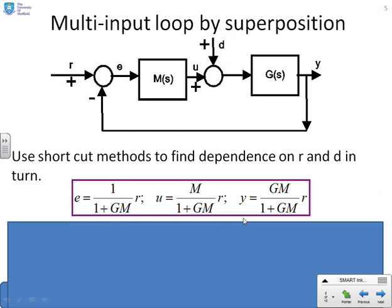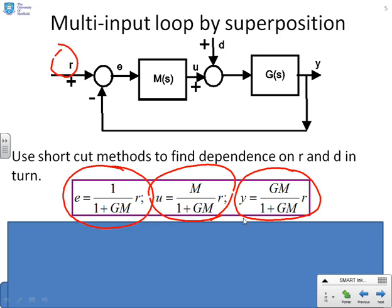So now what next? Let's look if we can use superposition and use shortcuts and find out what results we get if we do it that way. So first of all, I'm just considering the loop input signal R. So there it is, R. And this is what was covered in the previous video. So we take forward path over 1 plus return path. So you can see E, the forward path is 1. The loop transfer function is GM. So you get 1 over 1 plus GM times R. For U, you get M over 1 plus GM times R because the forward path is M. And for Y, you get GM over 1 plus GM times R because the forward path is GM. So that's the same as before.